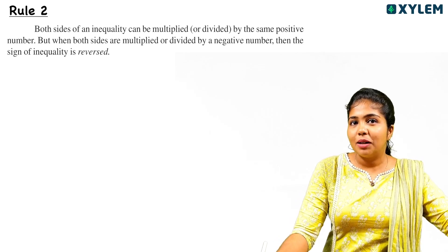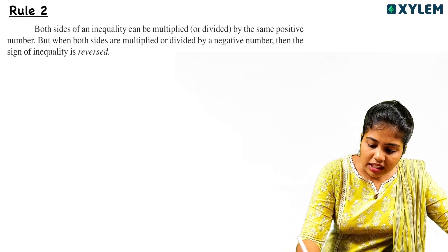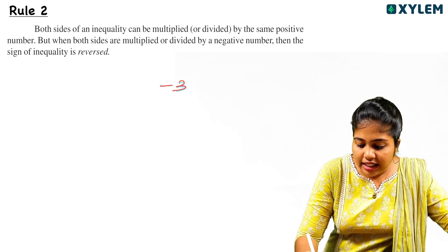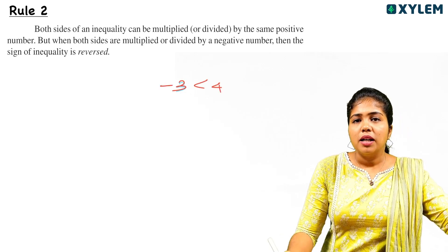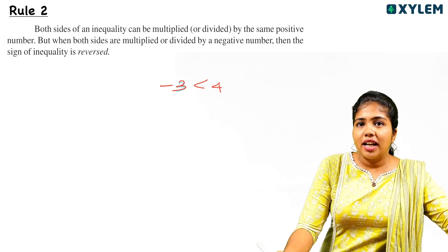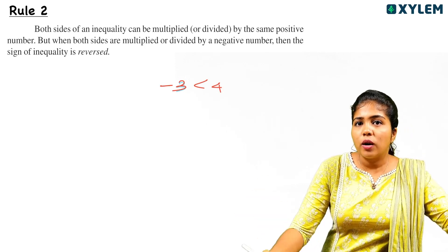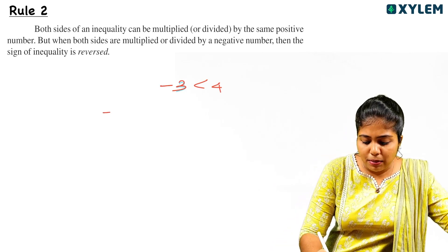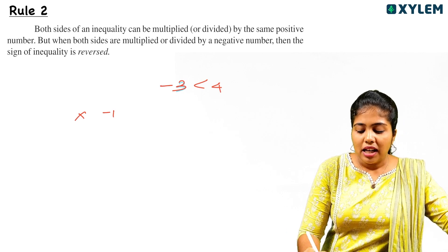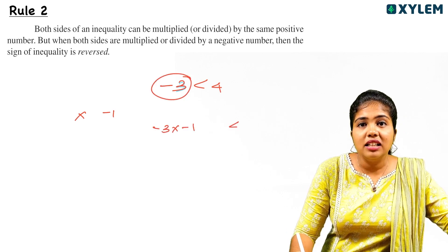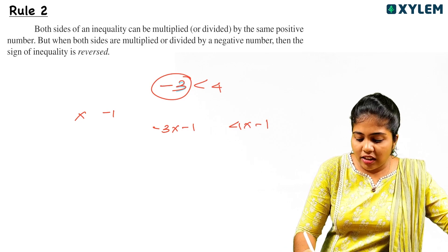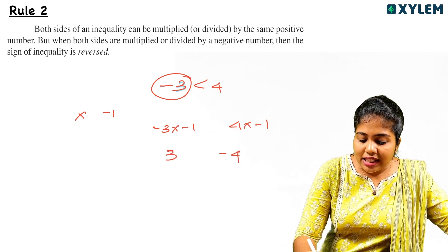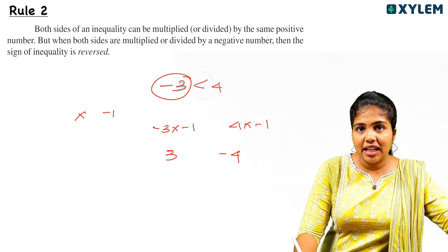That means rule number 2. For example, if I take minus 3, it is less than 4. Now, minus 3 multiplied by minus 1 is 3, and 4 multiplied by minus 1 is minus 4. So we have minus 3 into minus 1 gives 3, and 4 into minus 1 gives minus 4. This means 3 is greater than minus 4 — the sign has flipped.